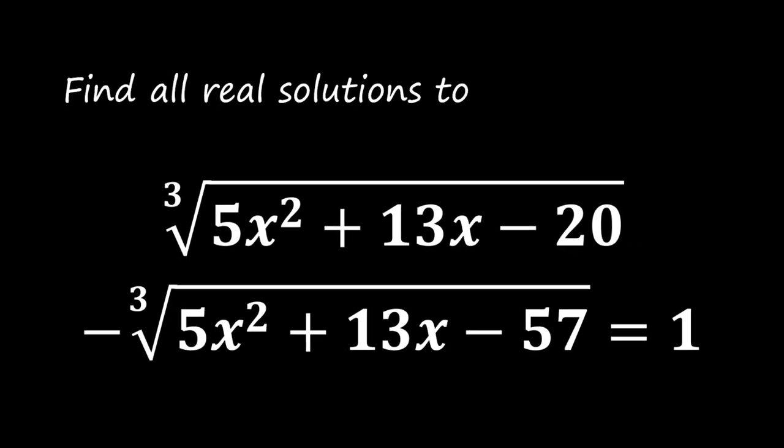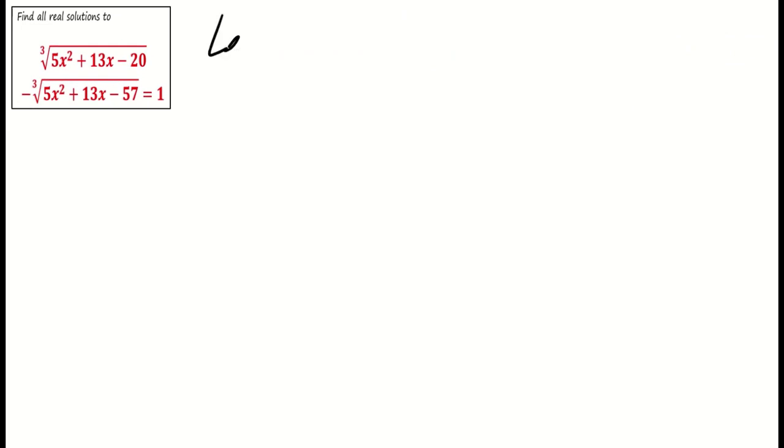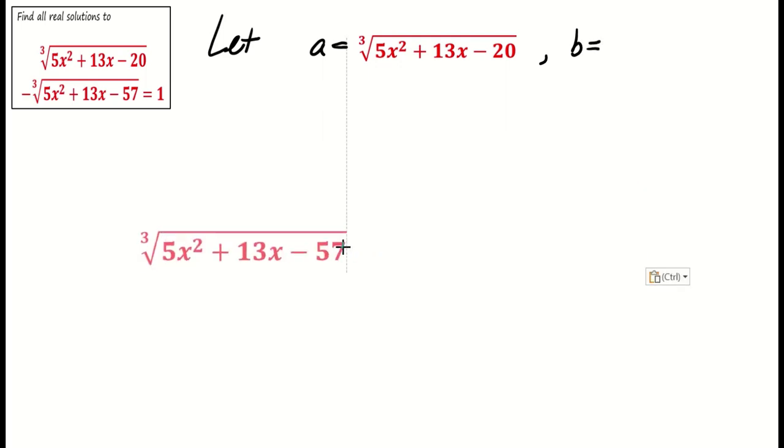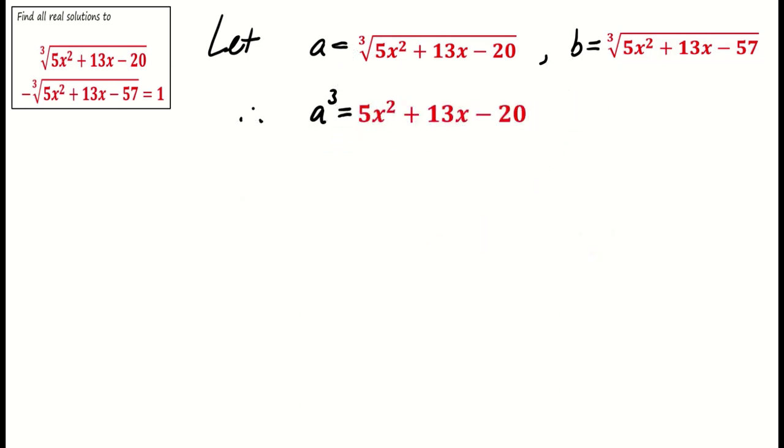Let's get started. Let a be the first term of the left-hand side of the equation and b be the second term. Hence, a³ = 5x² + 13x - 20 and b³ = 5x² + 13x - 57.